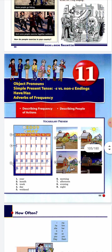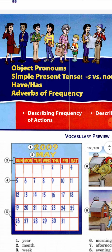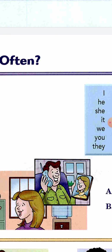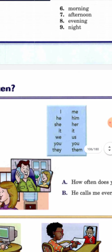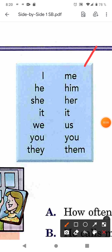We begin with Unit 11: object pronouns. The personal pronouns — I, he, she, it, we, you, and they — have an equivalent when they become the object of an action. Todos los verbos tienen como objetivo algún pronombre. For example, 'ayúdame' — the object is me, so it would be 'help me.' If the object is my grandmother, it would be 'help her.'